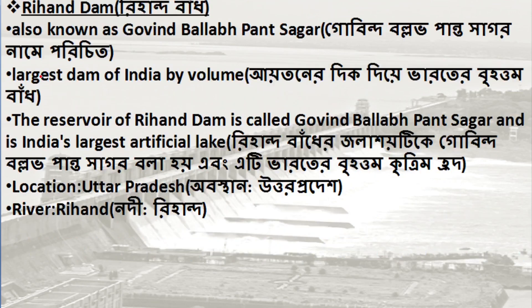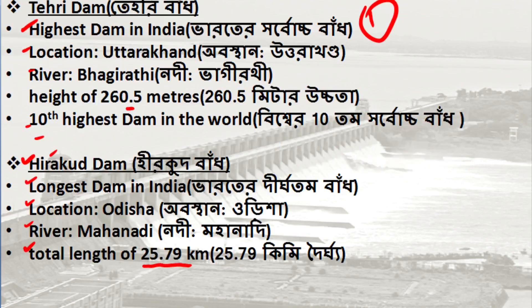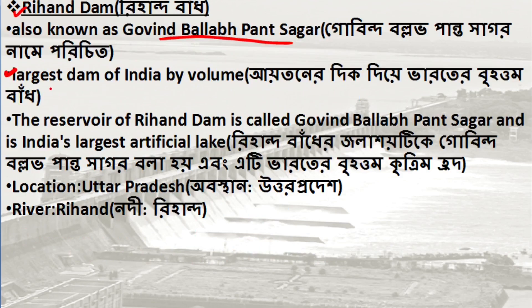The third dam is Rihand Dam. Rihand Dam has a larger volume than other dams. The most important distinctions are: the tallest, the largest dam by volume. The reservoir created is called Govind Ballabh Pant Sagar.